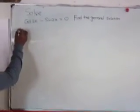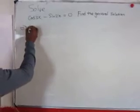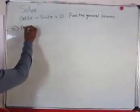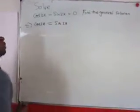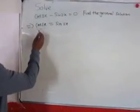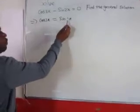To proceed here, this implies that cos 3x equals sin 2x. We now have cos 3x equals sin 2x.